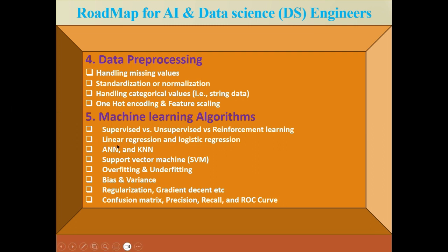After covering supervised, unsupervised, and reinforcement learning, the second topic is linear regression and logistic regression. Then ANN — Artificial Neural Network — and KNN — K-Nearest Neighbor. After that, cover Support Vector Machine, then overfitting and underfitting: what they mean, how to build and train a model properly, and when to stop training.